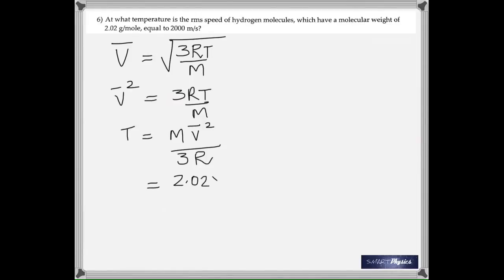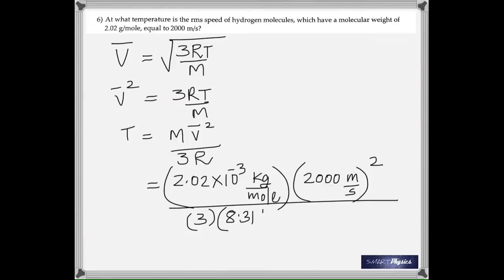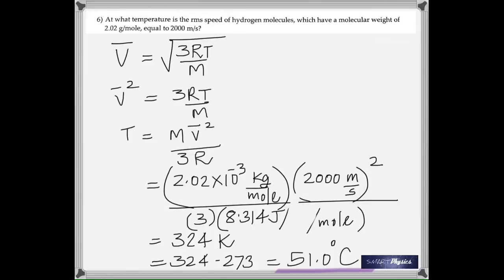Substitute values: M must be in kilograms so it's × 10⁻³, and the velocity squared is 2000² = 4,000,000. Divide by 3 times R (8.314 J per Kelvin per mole). That gives 324 Kelvin, or 51.0 degrees Celsius if you want it in Celsius.